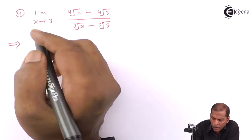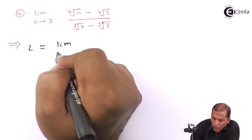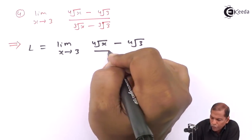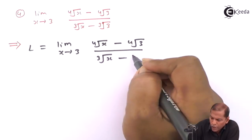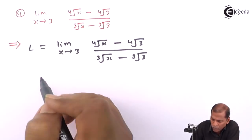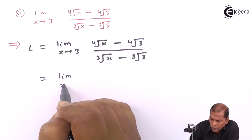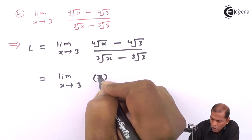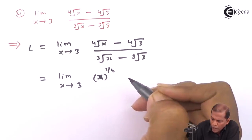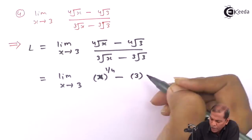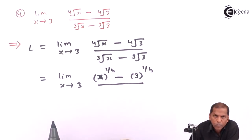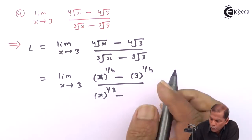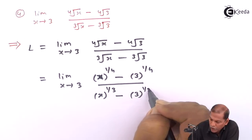First of all we denote the limit as L. So L equals limit x tends to 3 of 4th root of x minus 4th root of 3, upon cube root of x minus cube root of 3. Now, 4th root of x can be written as x raised to 1/4, minus 3 raised to 1/4, upon x raised to 1/3, minus 3 raised to 1/3.